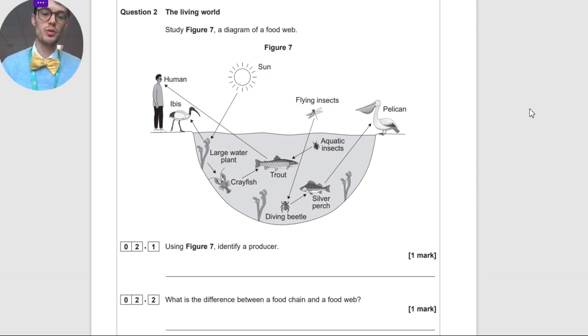Question number one, or 2.1, said, using figure seven, identify a producer. Figure seven is showing you a food web of a small-scale ecosystem, in this case a pond ecosystem. The biggest mistake made here is that a lot of people went straight to the start of the food chain and was like, cool, that is a producer. Correct in some ways, but a producer has to be a biotic or living thing. It can't be abiotic and non-living. So a few people said the sun, because it's at the start, it can't work because it's not a living thing.